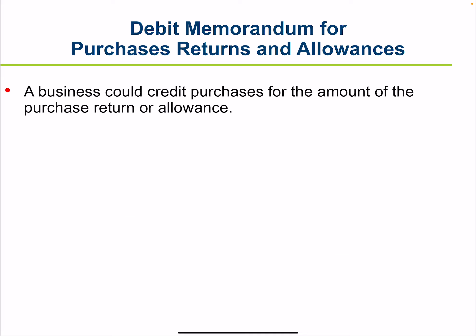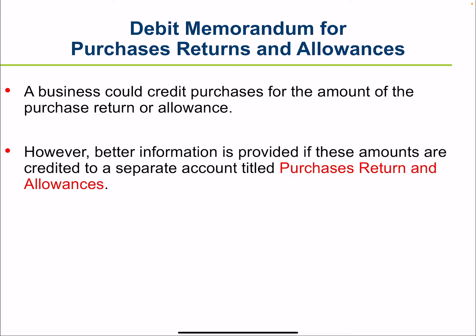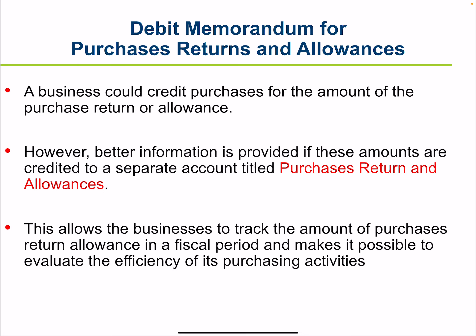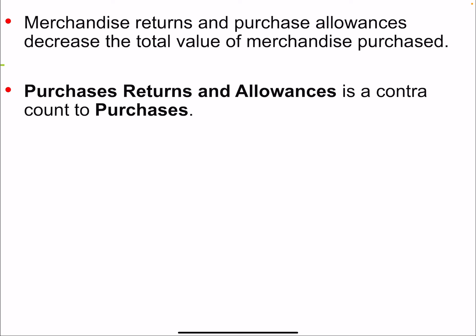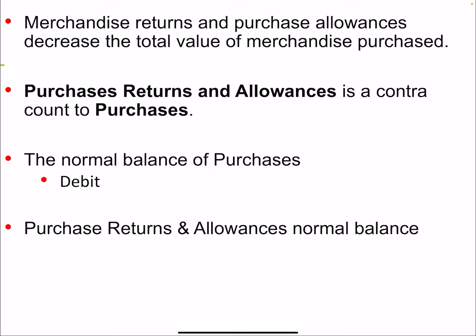A business could credit purchases for the amount of a purchase return and allowance. However, better information is provided if these amounts are credited to a separate account called purchase return and allowance. The normal balance of purchases is a debit. Purchase return and allowance is a contra account to purchases, so its normal balance is a credit — contra being opposite of normal — and it reduces the related account.